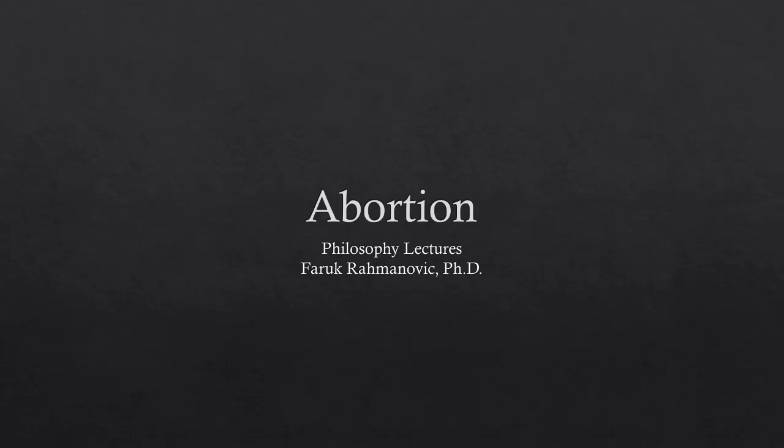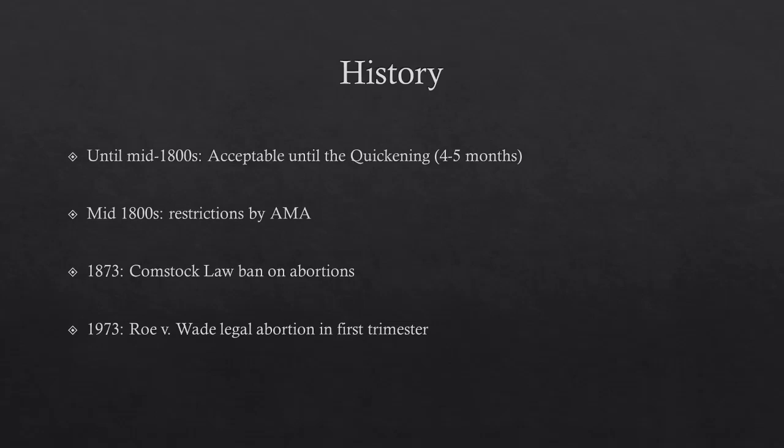Let's jump into the history. According to our textbook, from the founding of the U.S. until the mid-1800s, abortion was perfectly normal and acceptable until the point of quickening, roughly four to five months into the pregnancy, when the fetal movements became detectable by the mother. In the mid-1800s, the AMA began asking for restrictions.